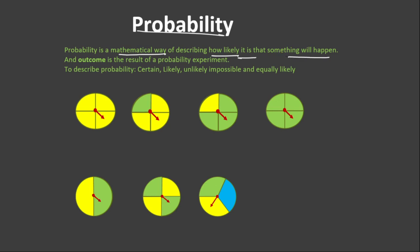In probability experiments, we have an outcome. An outcome is the result of the probability experiment.